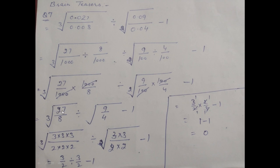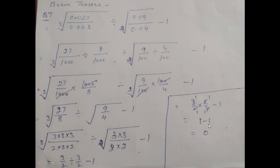The cube root of 27 over 8: prime factors of 27 are 3 × 3 × 3 and of 8 are 2 × 2 × 2, so cube root gives 3/2. For the square root part: factors of 9 are 3 × 3, giving 3; factors of 4 are 2 × 2, giving 2. So we have 3/2 minus 1. Changing the division sign to multiplication and reciprocating: 3/2 × 2/3 = 1. Then 1 minus 1 = 0. Your answer is 0.